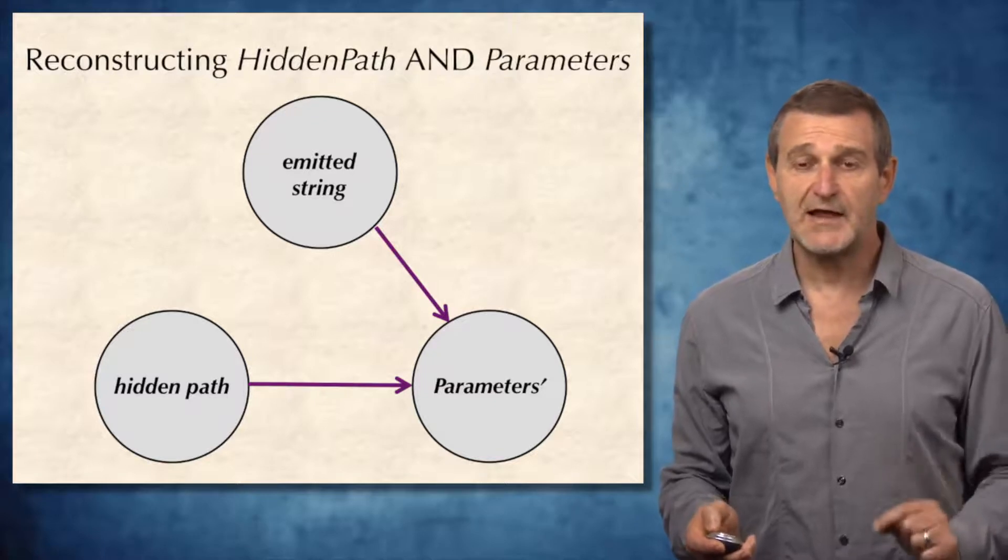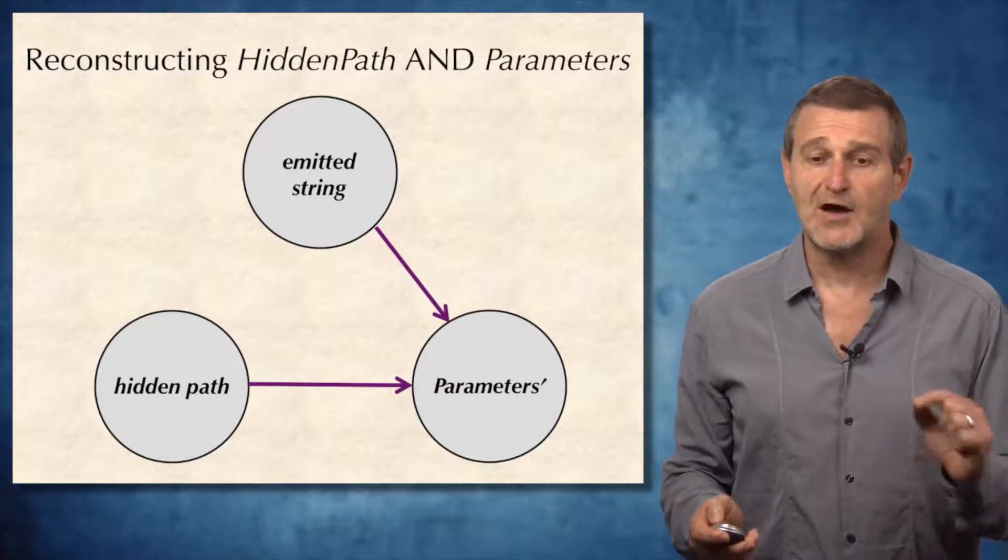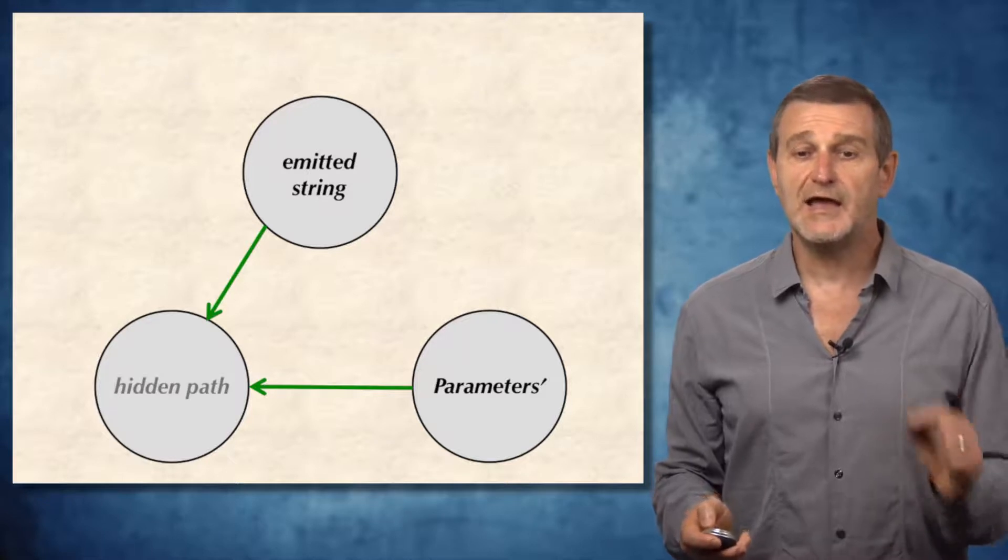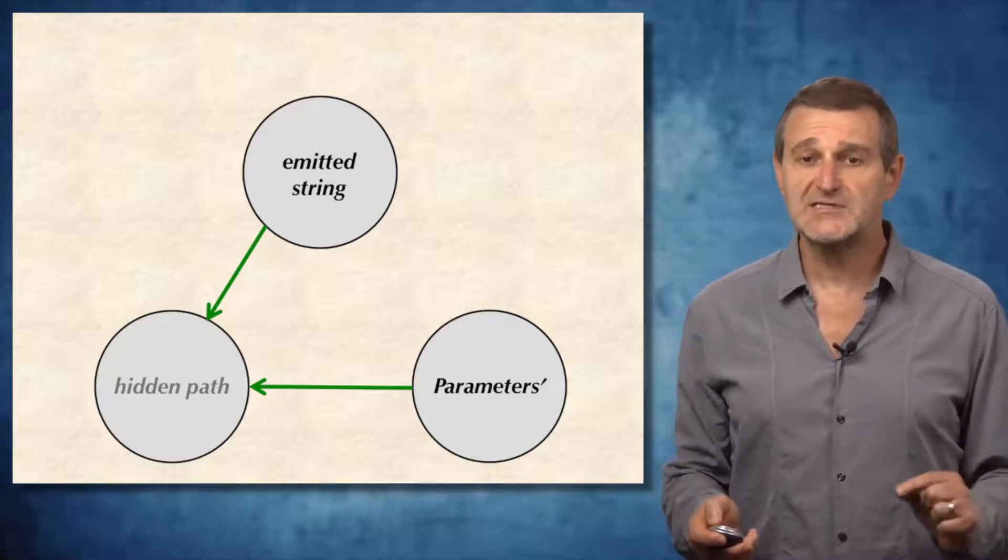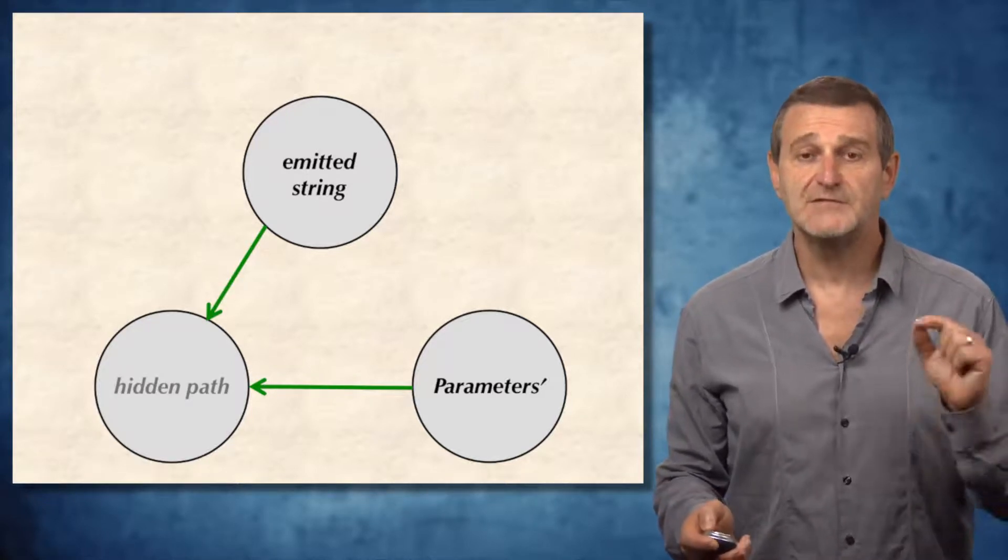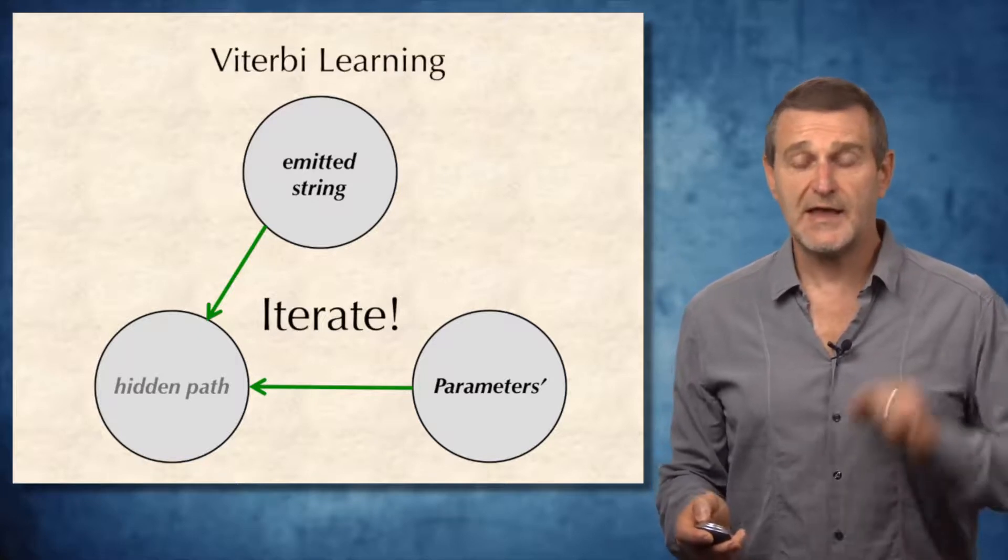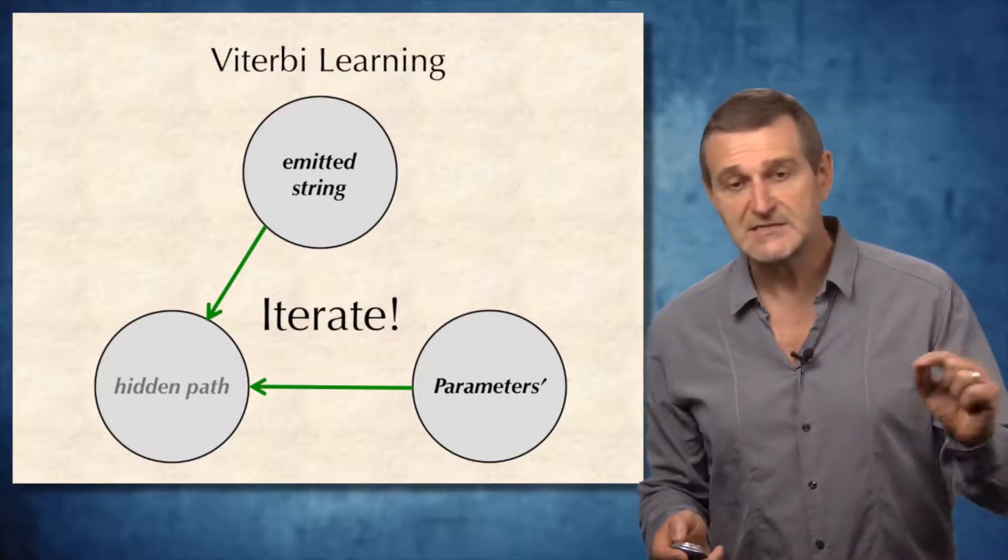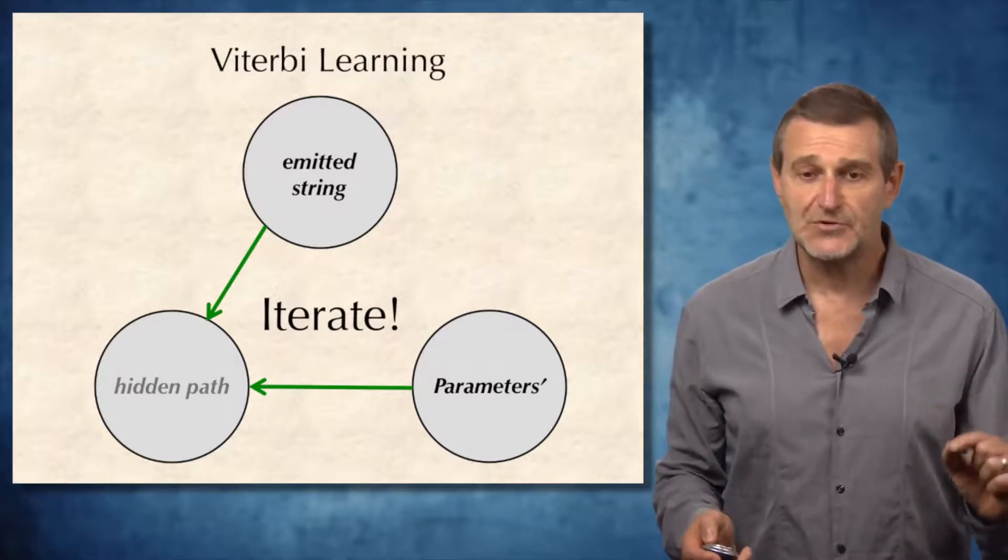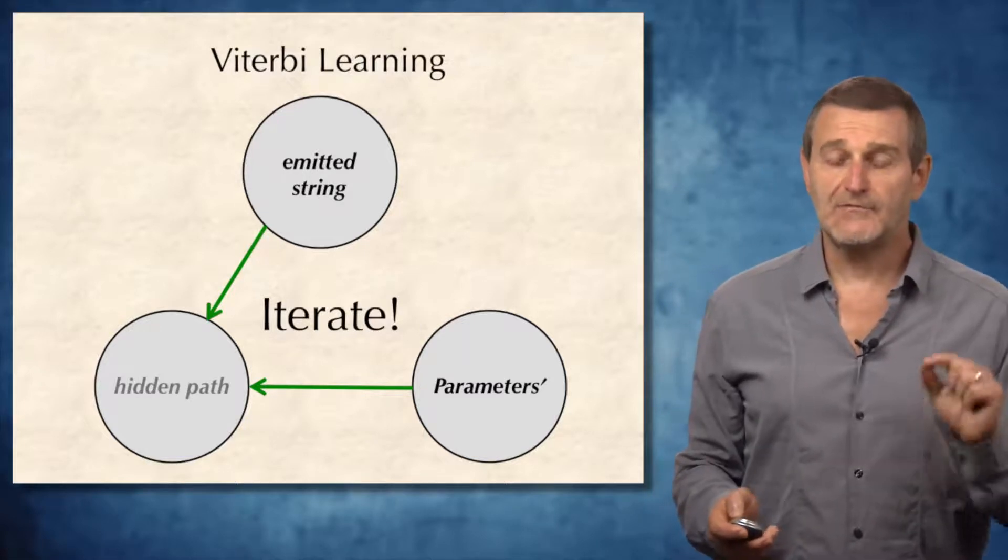Afterwards, we can once again forget about the hidden path we have constructed and use the emitted string and new set of parameters to derive the new hidden path and iterate. This algorithm is called Viterbi learning for HMM.